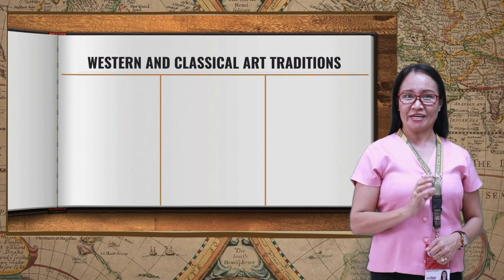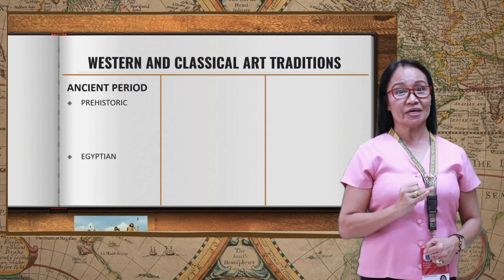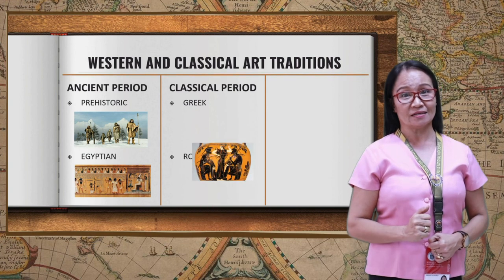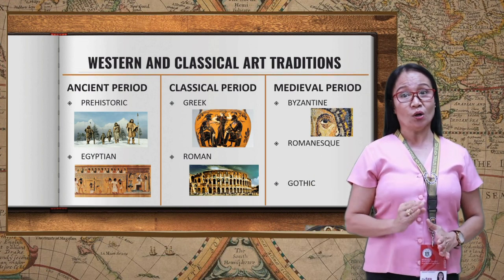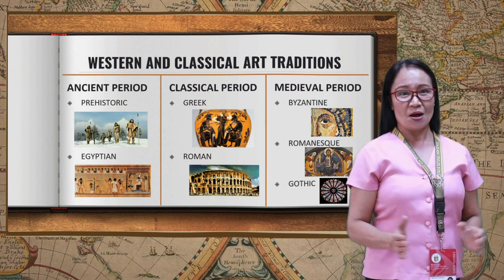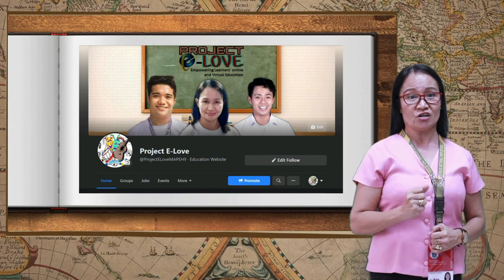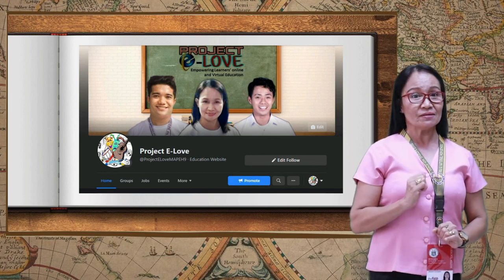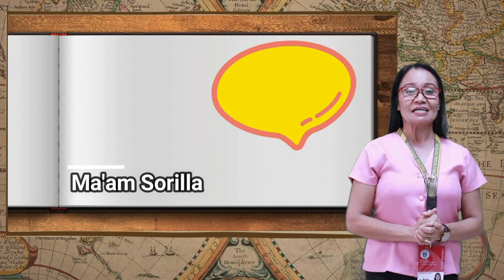You are now able to identify art elements and principles in the production of work following the style of ancient art, classical art, and medieval art, and compare the characteristics of artworks produced in the different art periods. Different eras, different styles, different characteristics and functions of art occurred, but all contributed to the development and importance of art in our lives today. I am also inviting you to visit and follow our Facebook page, Project E-Love, where we have posted virtual content that can help you review the lesson. Thank you so much — see you again next week.